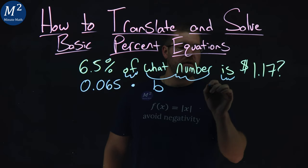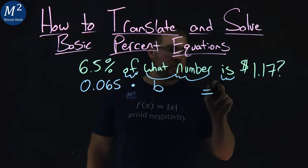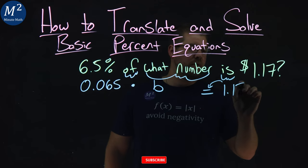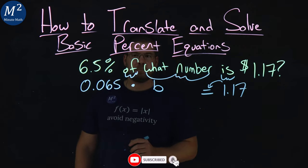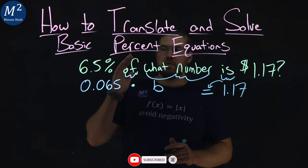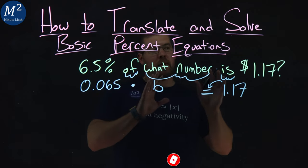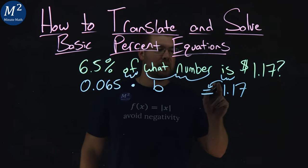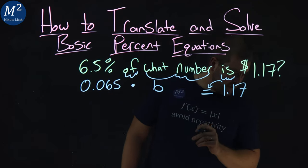Is - we got an equal sign for is, kind of going down here, and then $1.17, 1.17 at the end. So 6.5% of what number is $1.17? We have 0.065 times B equals 1.17.